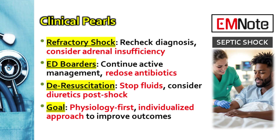If the patient is still refractory, circle back: is the diagnosis right? Did we miss a source? Think about adrenal insufficiency — consider giving hydrocortisone 50 mg IV every six hours. And the work isn't over when they leave the ED. Once shock starts to resolve, think about de-resuscitation. The goal completely flips: stop maintenance fluids, try to get the patient to a net negative fluid balance, often using diuretics, to prevent complications from all the fluid given during initial resuscitation.